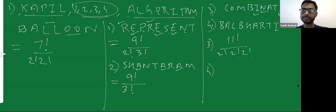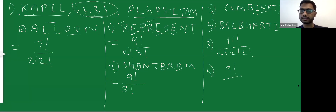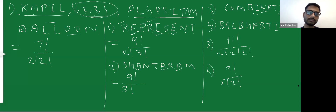For the fourth question, the word 'Balparthi' has 9 letters: 1 through 9. So the answer is 9 factorial divided by 2 factorial (since A is repeated twice) multiplied by 2 factorial (since B is repeated twice). All other letters are different.